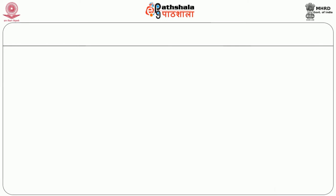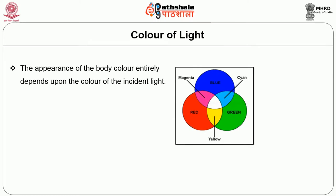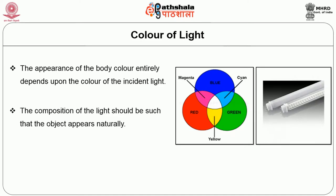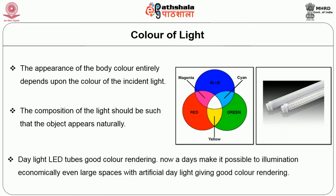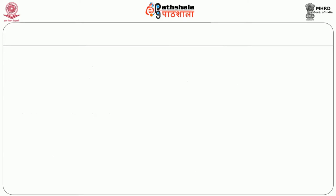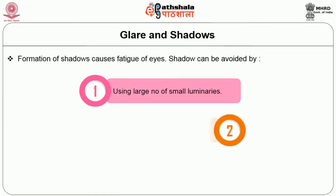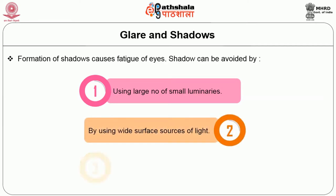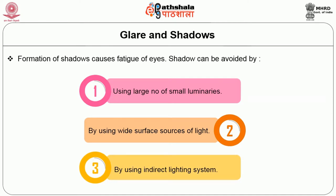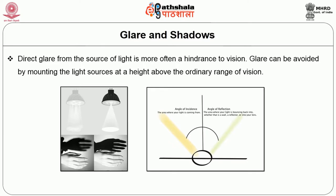Color of light: the appearance of body color entirely depends on the color of the incident light. The composition of the light should be such that objects appear natural. Daylight LED tubes nowadays make it possible to illuminate even large spaces economically with artificial daylight, giving good color rendering. Glare and shadows: formation of shadows causes fatigue for the eyes. Shadows can be avoided by using a large number of small luminaries, white surface sources of light, or indirect lighting systems. Direct glare from the source of light is more often a hindrance to vision. Glare can be avoided by mounting the light source at a height above the ordinary range of vision.